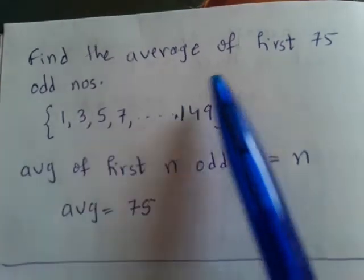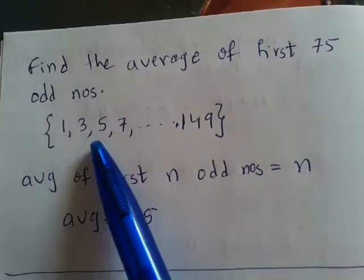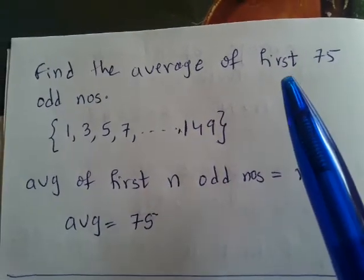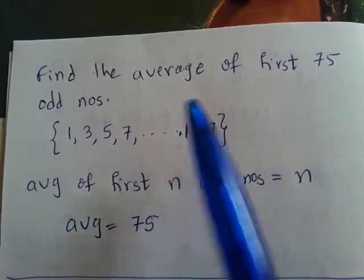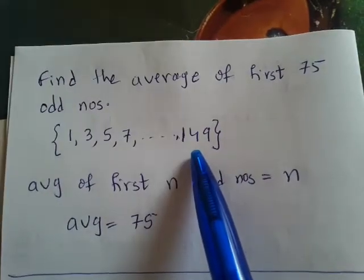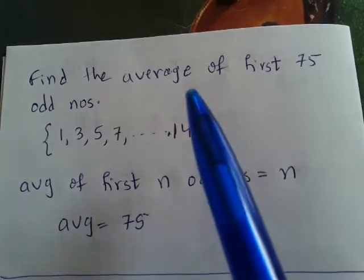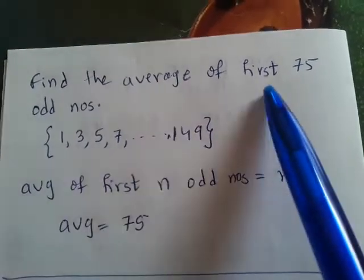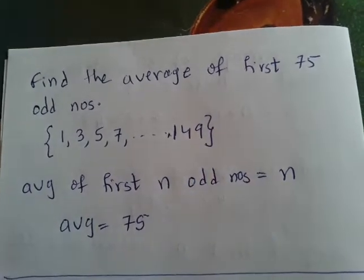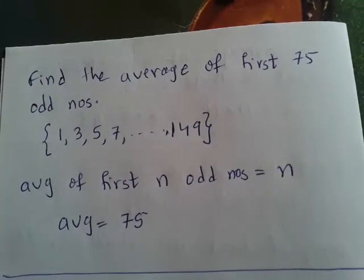Find the average of the first 75 odd numbers. We begin with 1 — 1, 3, 5, 7 — and it goes up to 149. The formula is very easy: average of first n odd numbers equals n. So for first 75 odd numbers, the answer is simply 75. For first 100 odd numbers, the answer is 100. For average of first 10,000 odd numbers, the answer is 10,000. As simple as that!